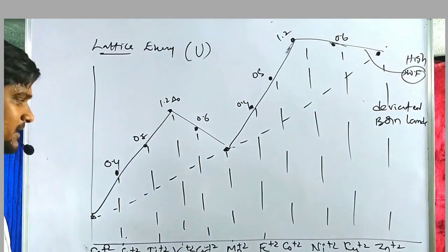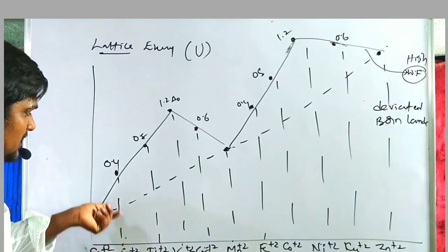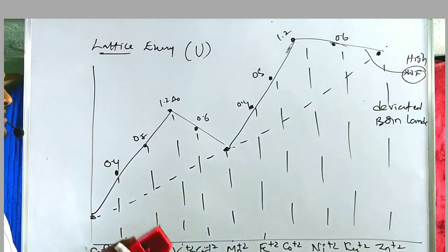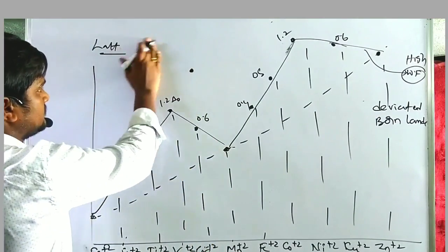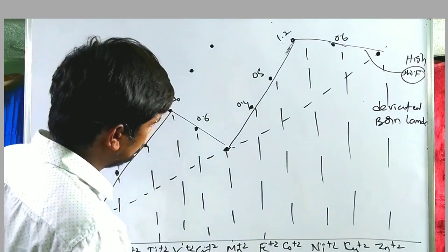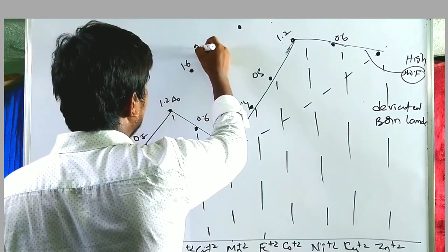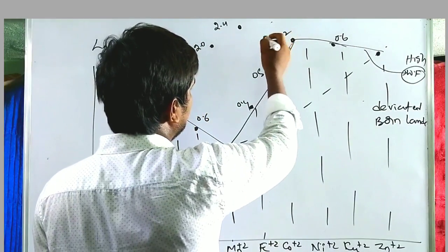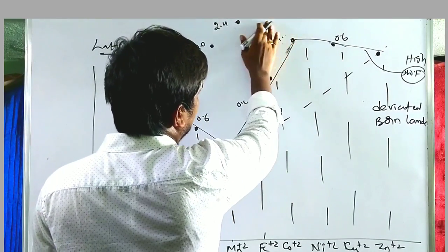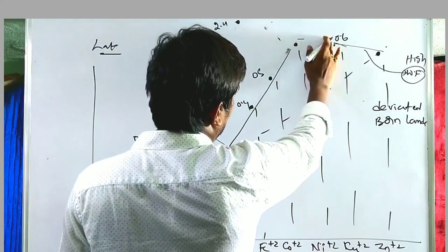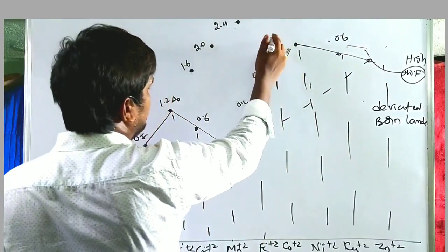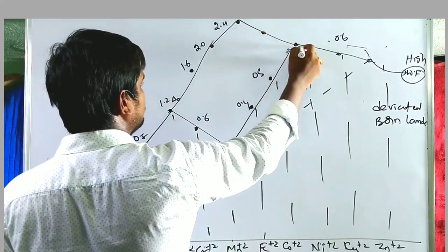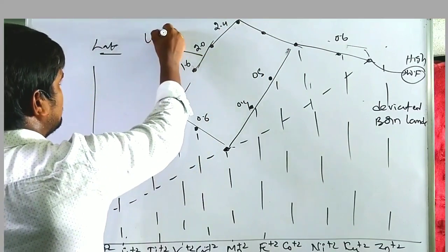For strong field low spin complexes, D4 CFSE = 1.6Δ_o, D5 = 2.0Δ_o, D6 = 2.4Δ_o, D7 = 1.8Δ_o, and D8 remains as usual. This graph belongs to strong field — low spin complexes. These values are given for different types of molecules. For example, Ni(H₂O)₆²⁺ versus Mn(H₂O)₆²⁺: Ni²⁺ is at the top of the graph due to its higher CFSE value (1.2Δ_o), while Mn²⁺ has CFSE = 0.